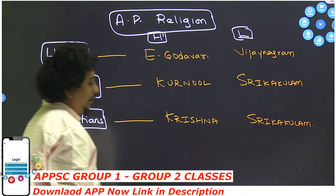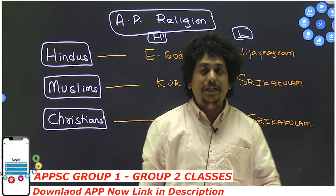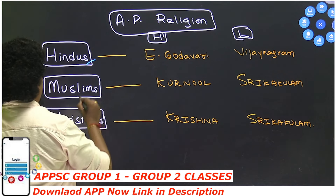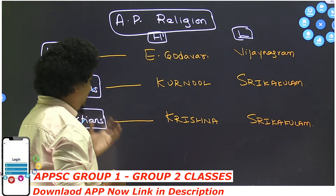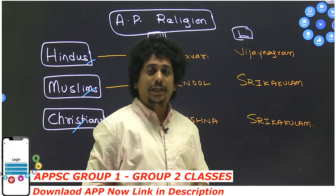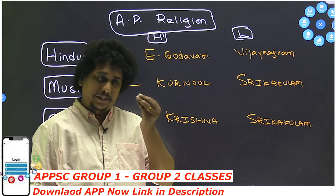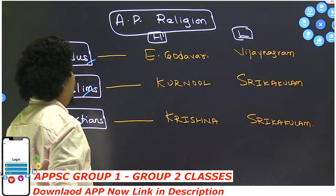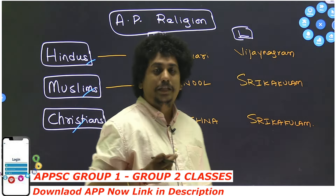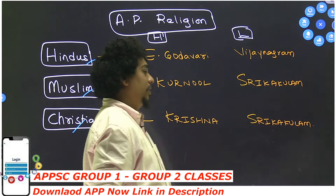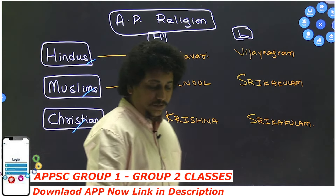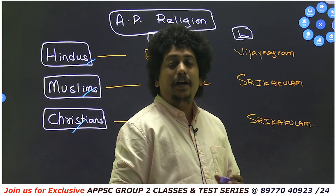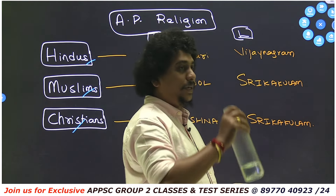Regarding religion-based data for Andhra Pradesh: the important religions covered are Hindus, Muslims, Christians, Sikhs, Jains, Buddhists, and Parsis. This is an important section from the examination point of view. Overall in India, Sikhs are significant, but the pattern differs with respect to Andhra Pradesh.